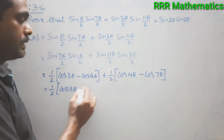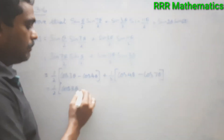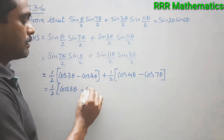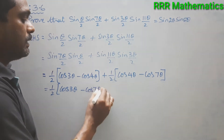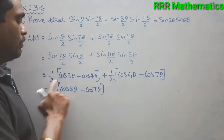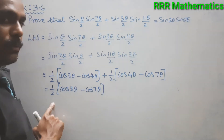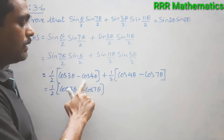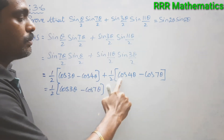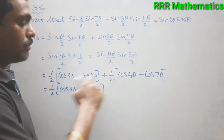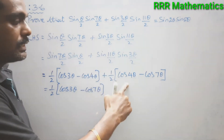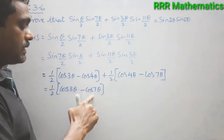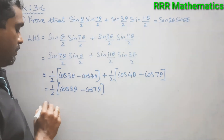...and A+B = 14/2 = 7θ, giving ½[cos 4θ − cos 7θ]. Taking ½ common overall: ½[cos 3θ − cos 4θ + cos 4θ − cos 7θ]. The cos 4θ terms cancel, leaving ½[cos 3θ − cos 7θ].